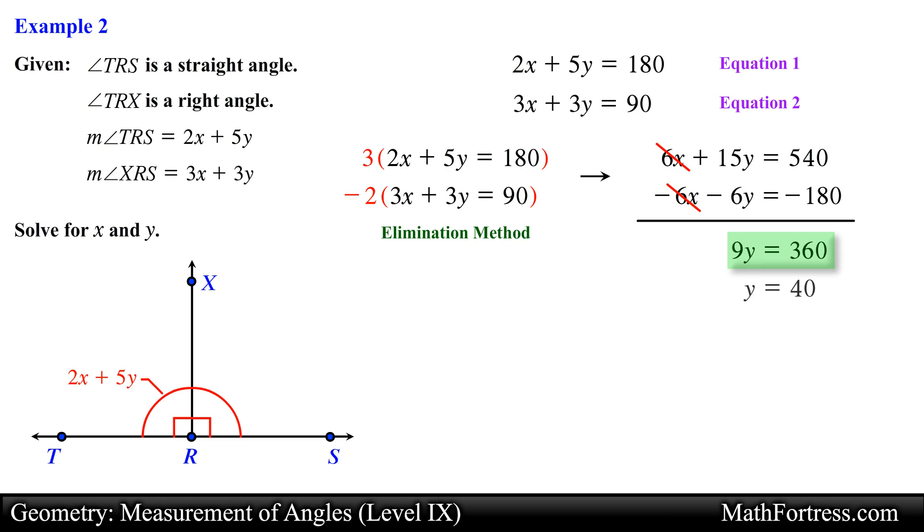Now that we have an equation with a single variable, we go ahead and solve for y. Simplifying the expression we obtain 40. The last step is to substitute this value into one of the original equations and solve for the variable x. Let's substitute this value into the second equation. Solving for x and simplifying, we obtain negative 10 for the value of x. So x equals negative 10 and y equals 40.